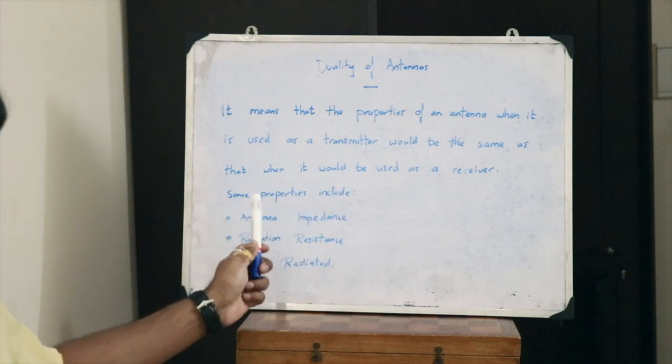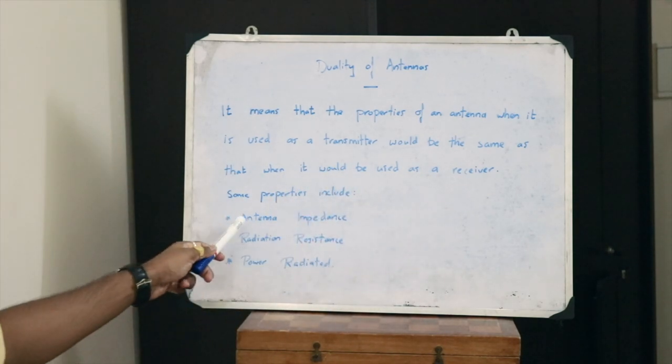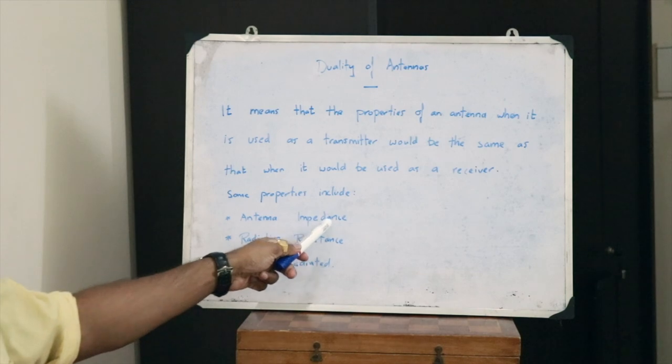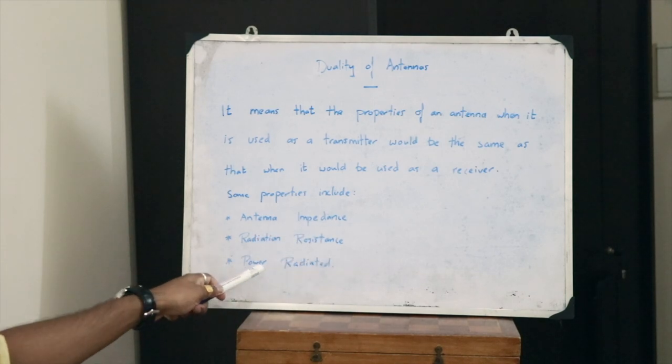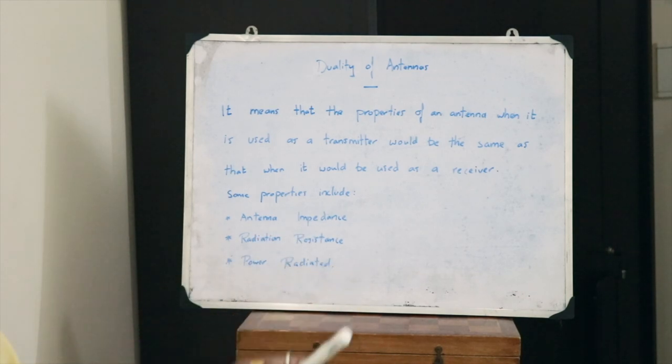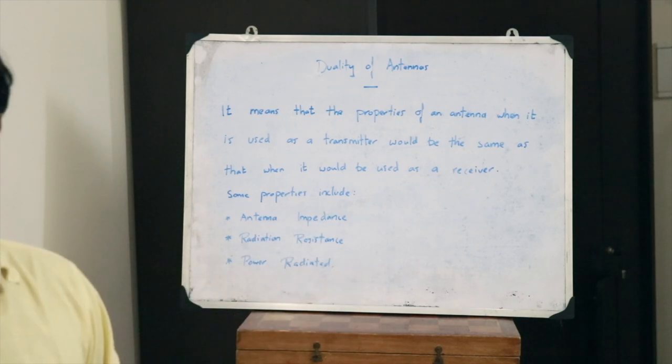Certain of those properties include the antenna impedance, the radiation resistance, the power radiated, etc. So this thus explains what the principle of duality of antennas states.